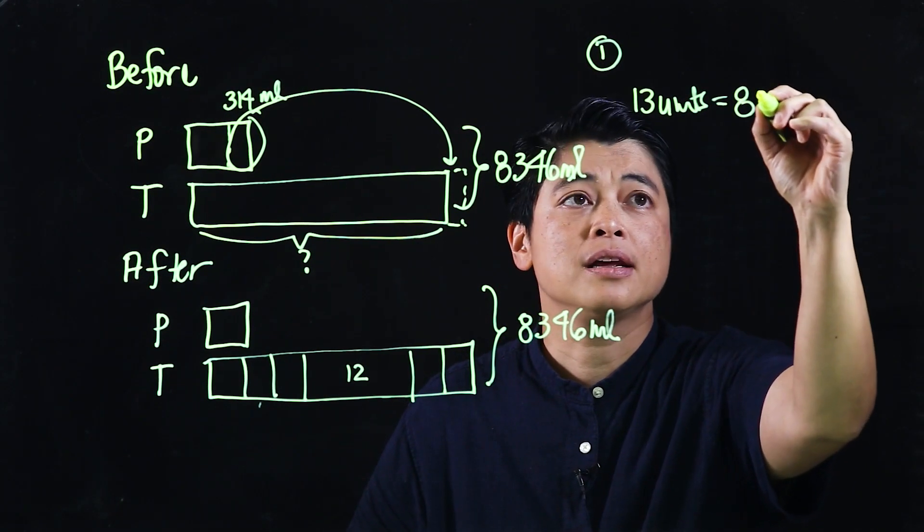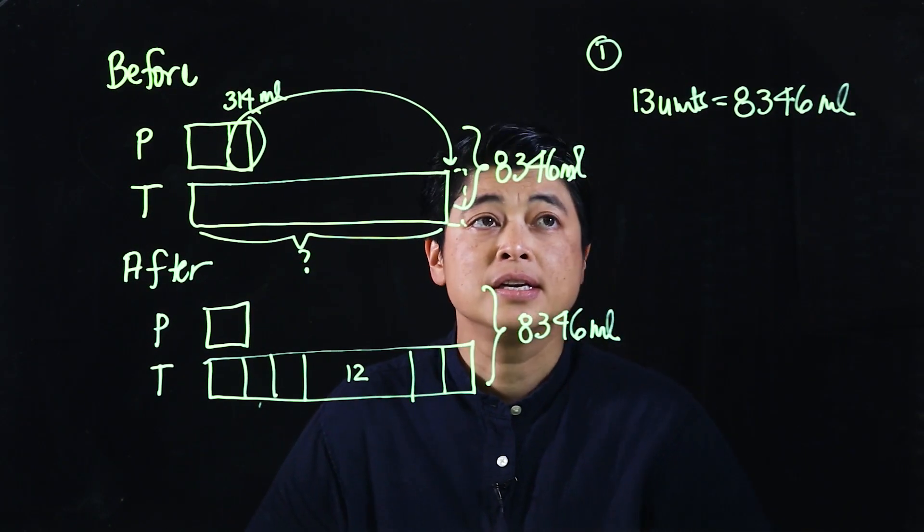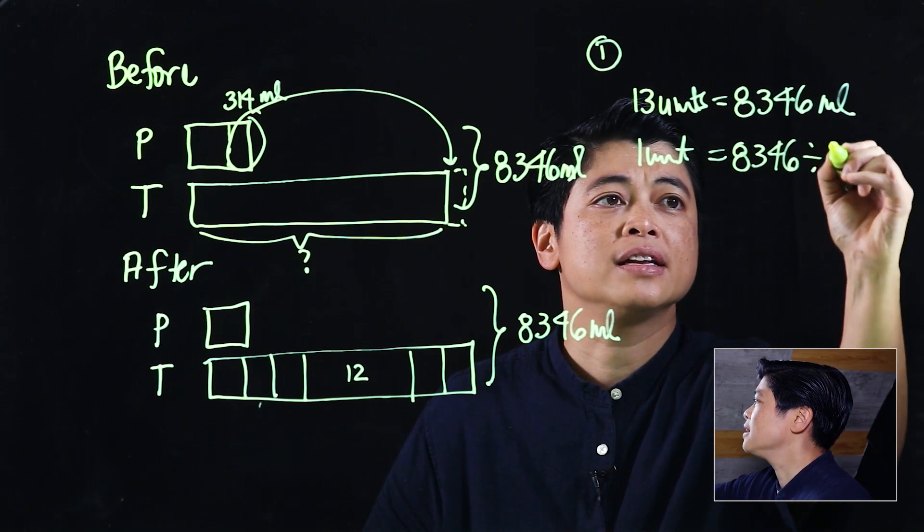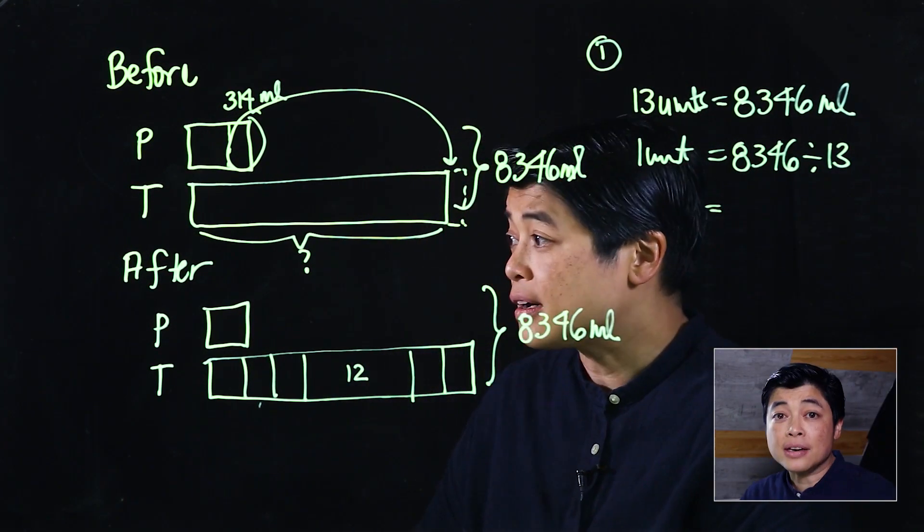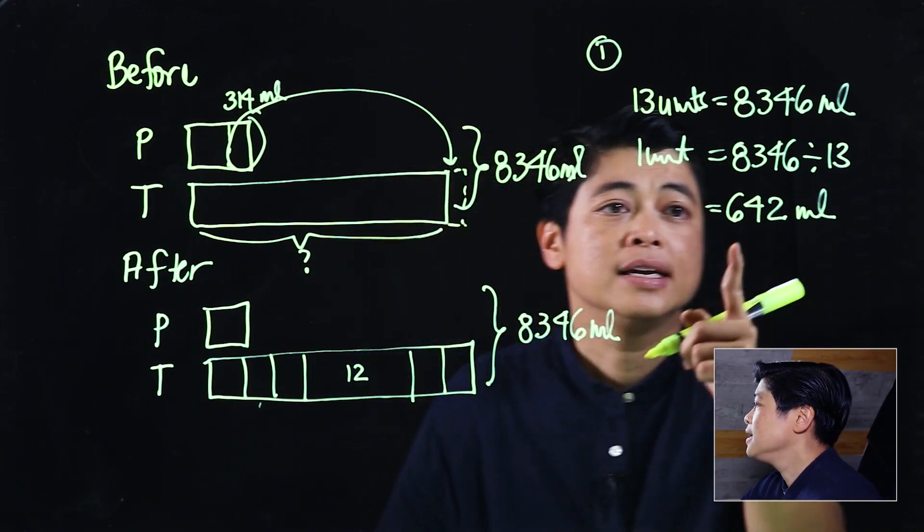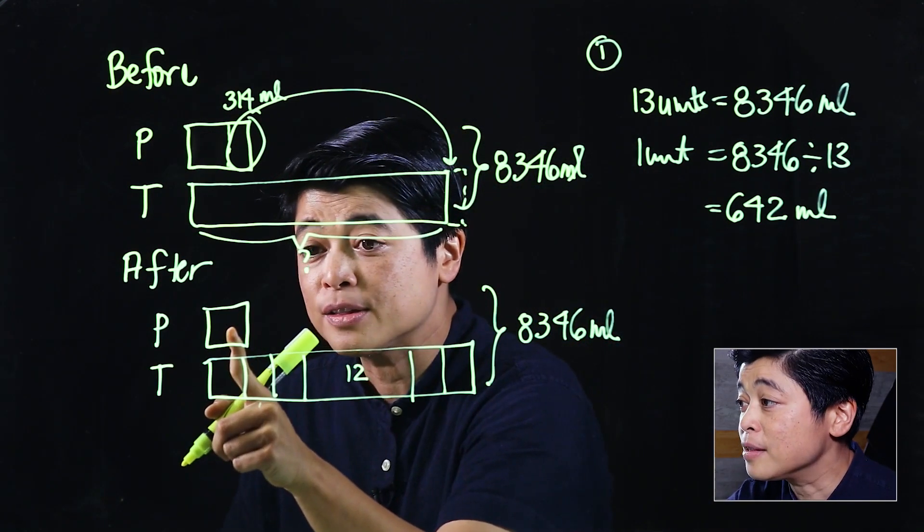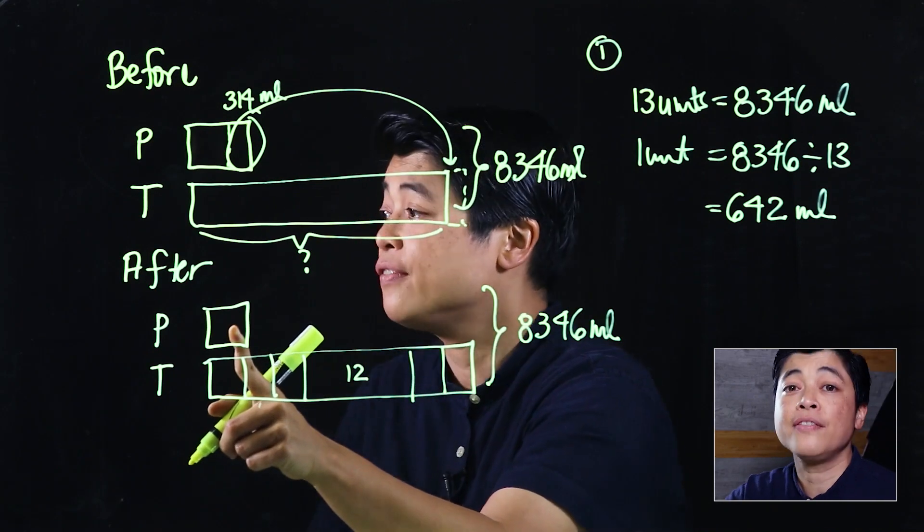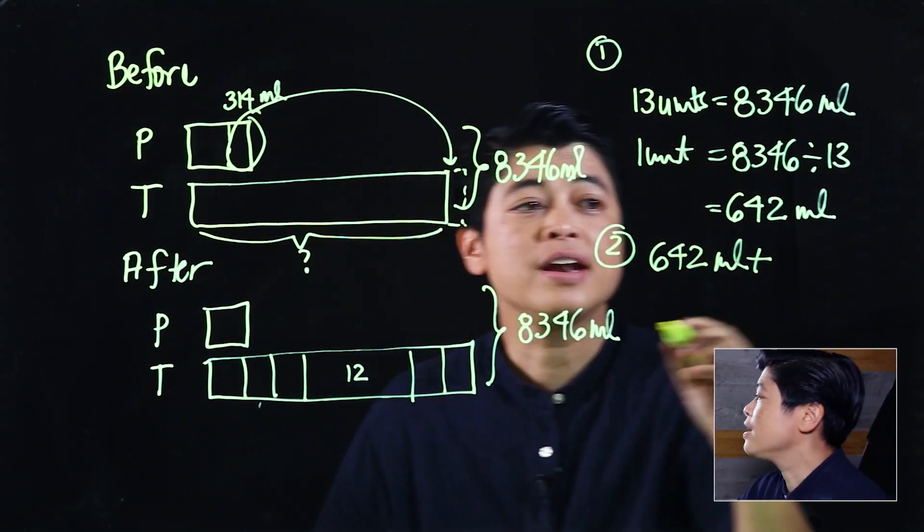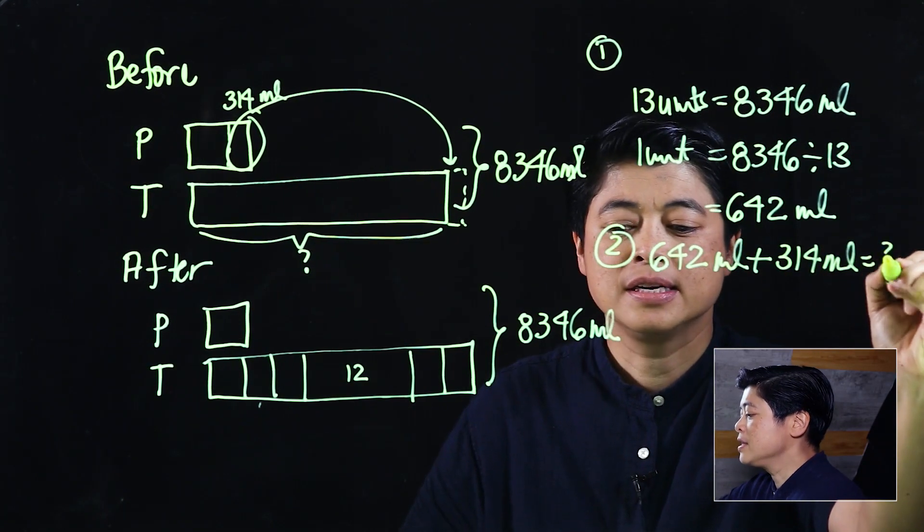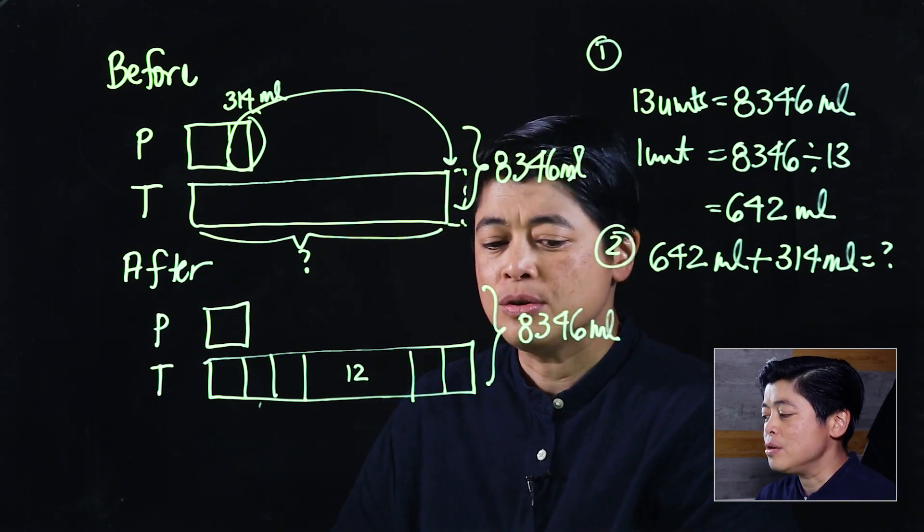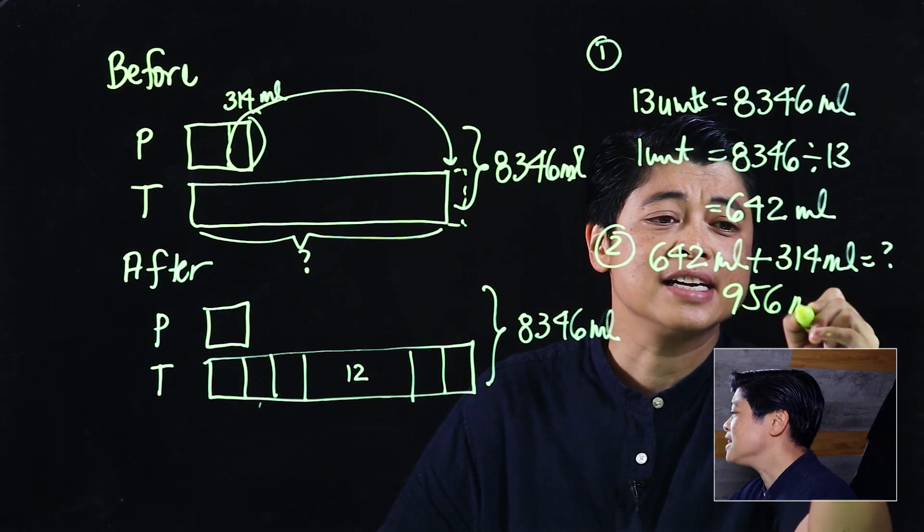13 units is equal to 8,346 milliliters. So which means one unit is equal to 8,346 divided by 13. With the use of a calculator, that would have been 642 milliliters. Which means that without the 314 is 642. So our second step will be 642 milliliters plus the 314 milliliters that was taken away should give you how much was in the pail at the start. With the use of a calculator, that should be 956 milliliters.